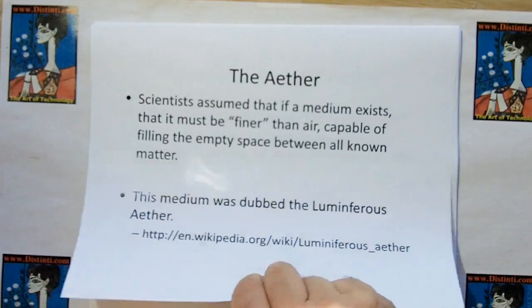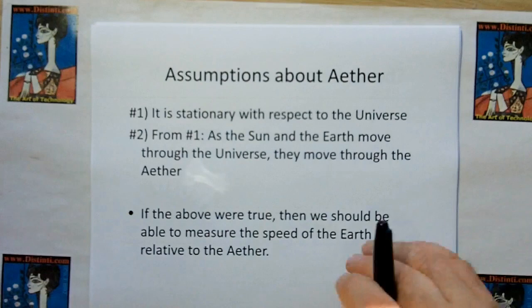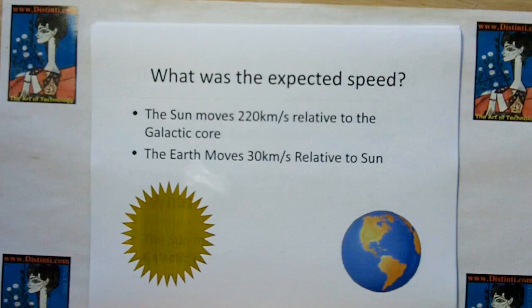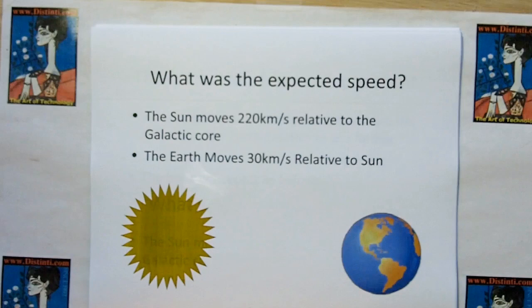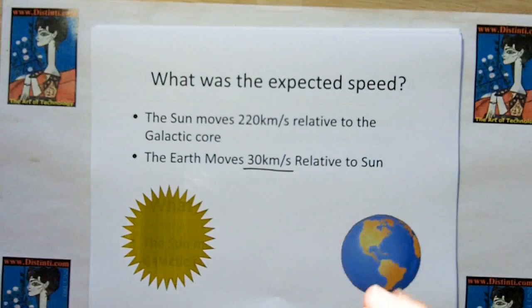What are the assumptions they made? They assumed the ether is stationary with respect to the universe, and that the sun and the earth move through this stationary ether. If so, we should be able to measure the speed of the earth relative to the ether. The sun moves at 220 kilometers per second relative to the galactic core, and the earth moves 30 kilometers per second in its orbit about the sun. So at the very least, we should measure at least 30 kilometers per second — probably something bigger.